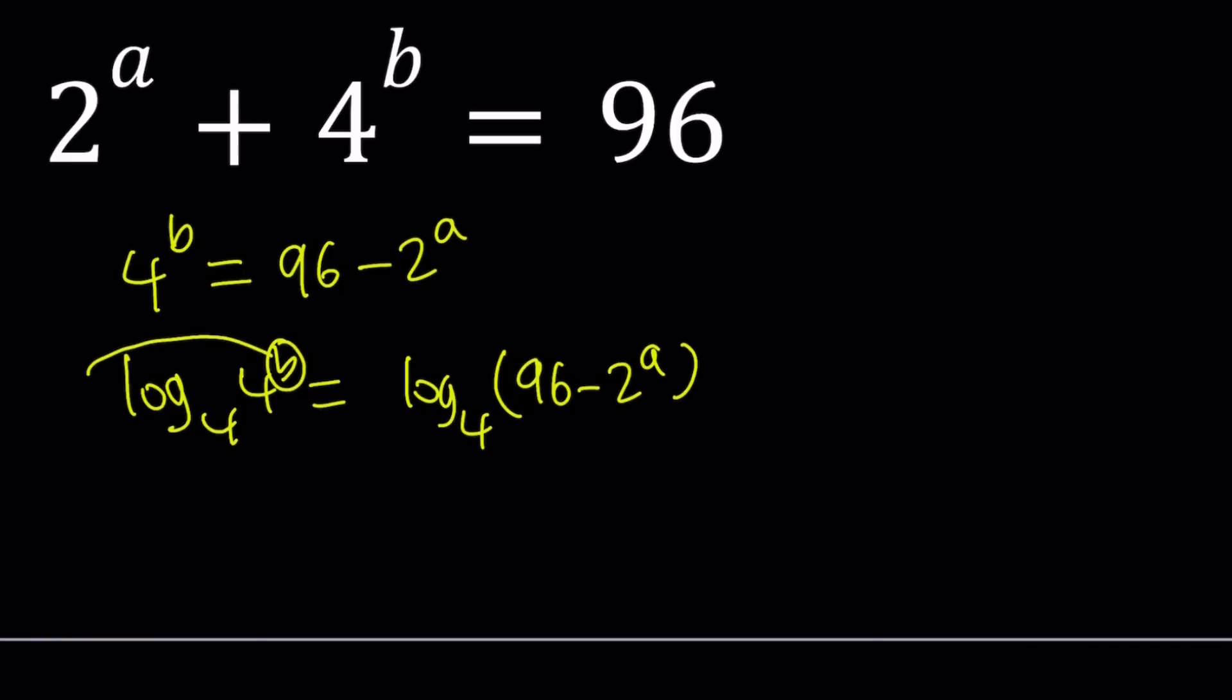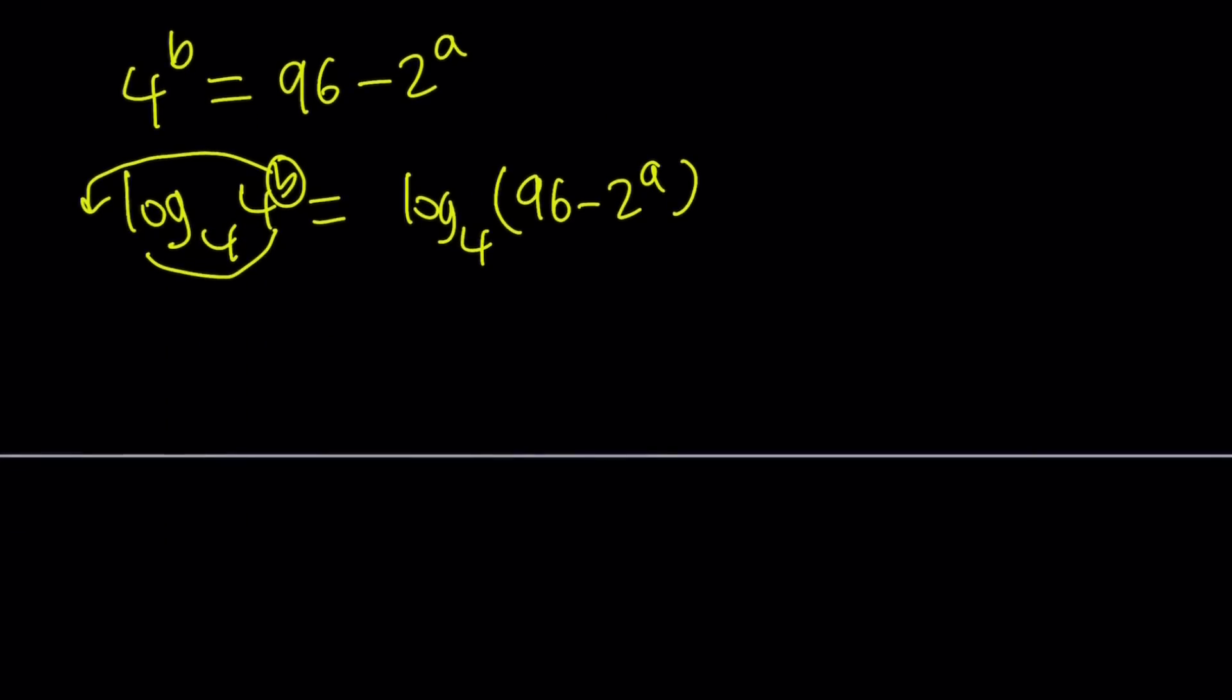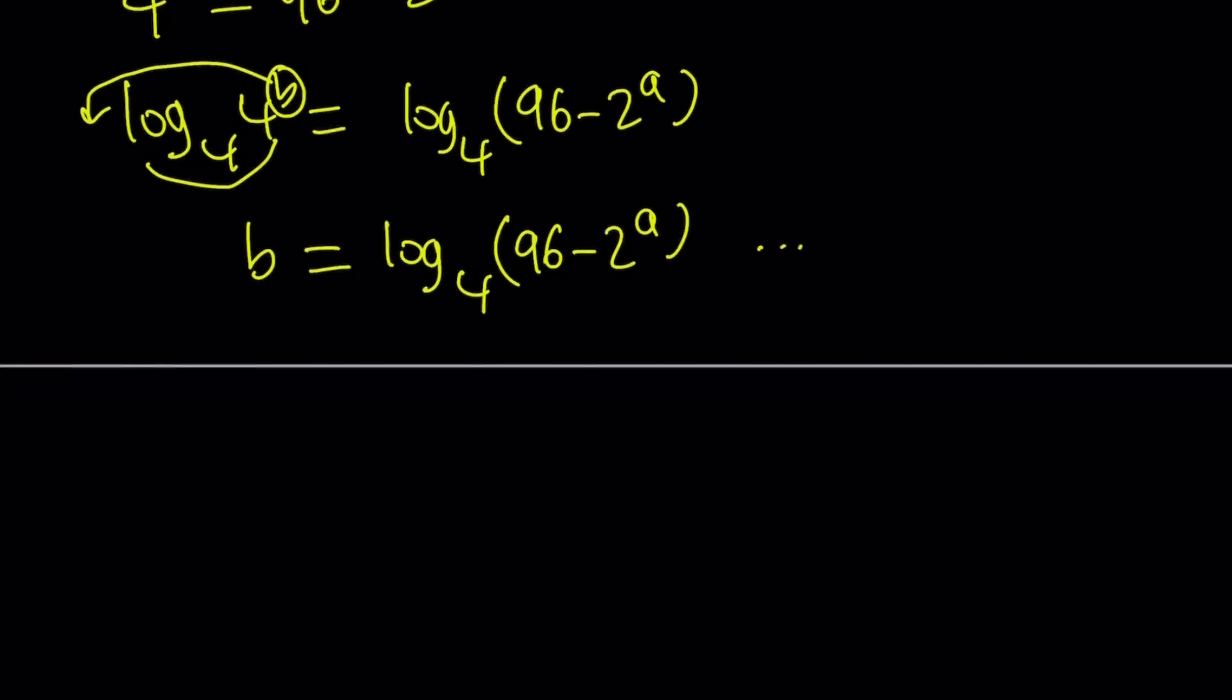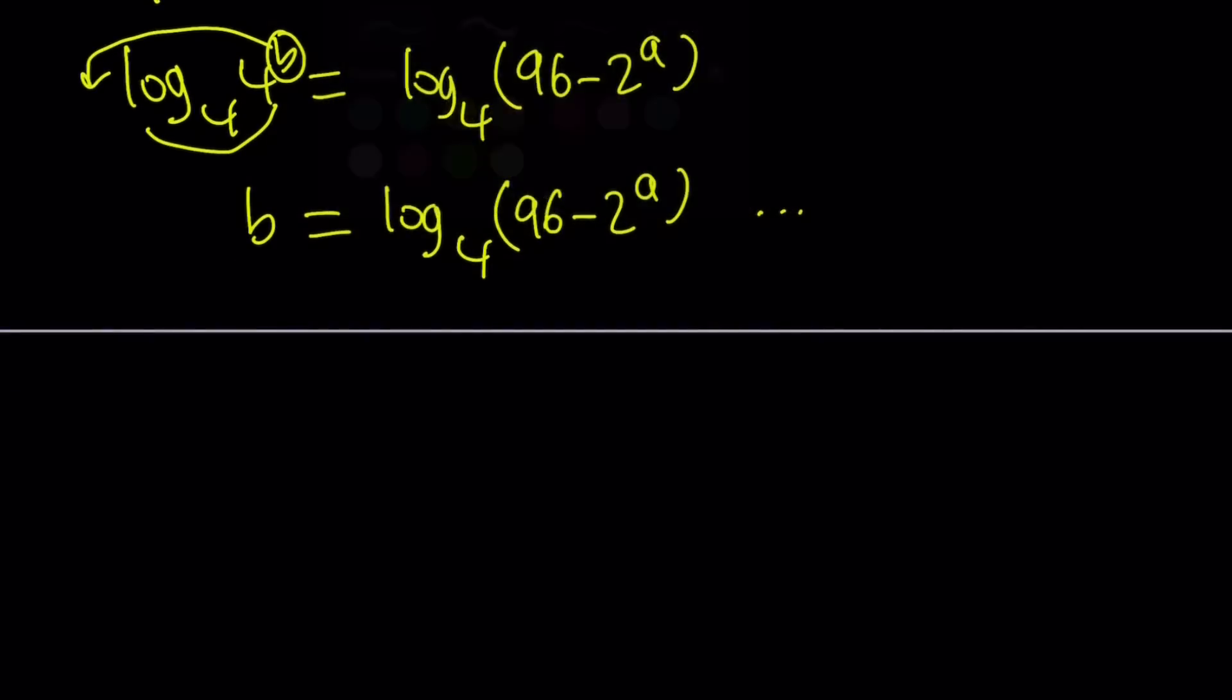Now b, you're going to bring it to the front, log 4 base 4 is going to be 1. So you can basically write this as b equals log of this quantity base 4. And basically for any replacement of a with a number, any real number, you're going to get a value for b, so there's going to be infinitely many solutions. But that's not what we're looking for. We're looking for integer solutions.